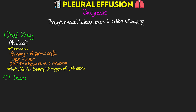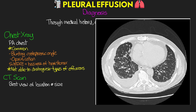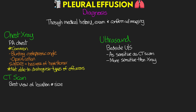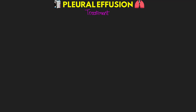CT scan provides the best look at the location and size of the pleural effusion. Here's an example showing bilateral pleural effusions — one side clearly larger than the other — with two distinct areas of fluid collection visible, and the remaining areas representing lung tissue. Bedside ultrasound can also be used and has been shown to be as sensitive as a CT scan and more sensitive than an X-ray, making it a quick and easy option to assess for pleural effusion.